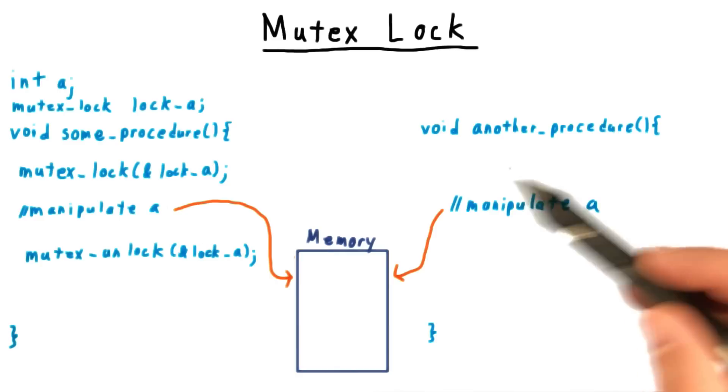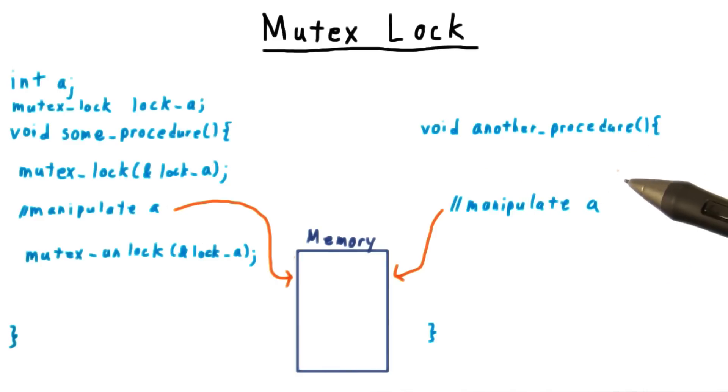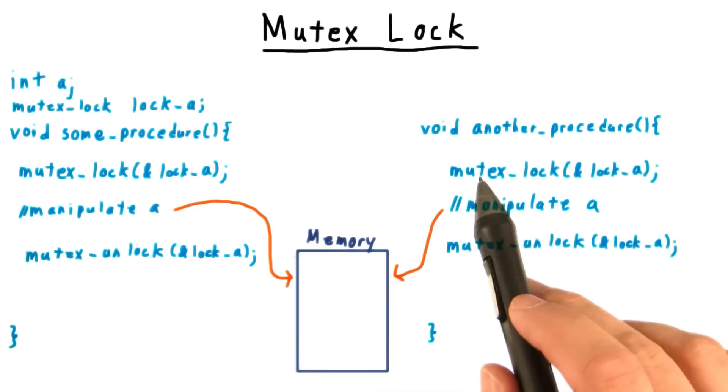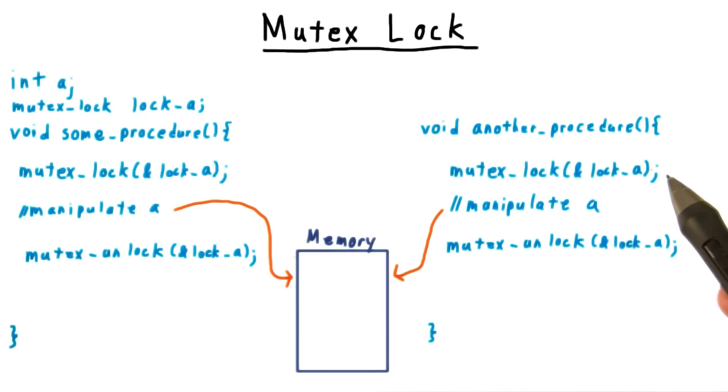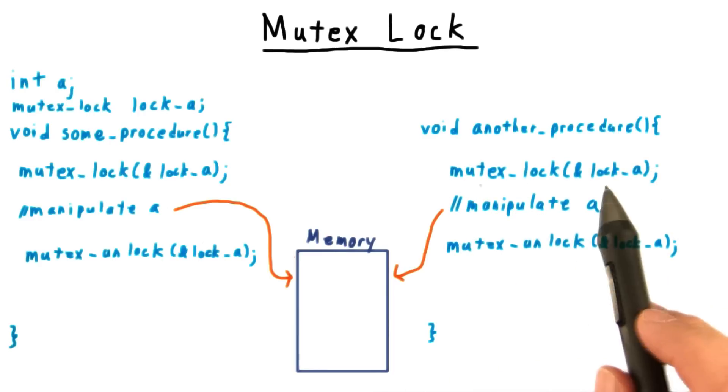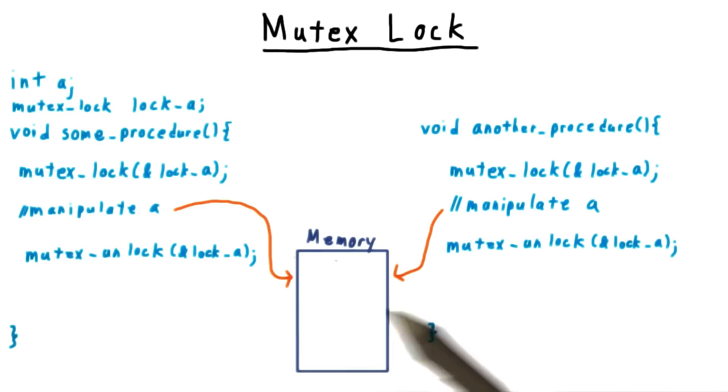If some other thread running this code simply accesses the shared resource without using the lock, it won't be able to stop him. But if he does try to acquire the lock first, then this call to mutex lock will block until the lock variable shows that it has been unlocked, and only then will this code proceed.